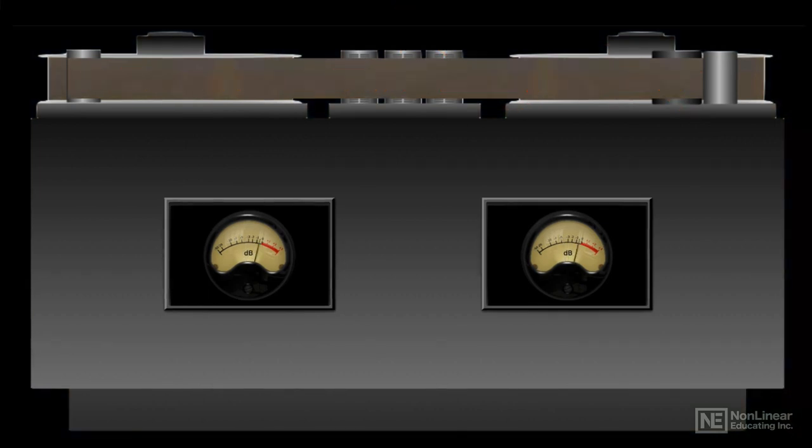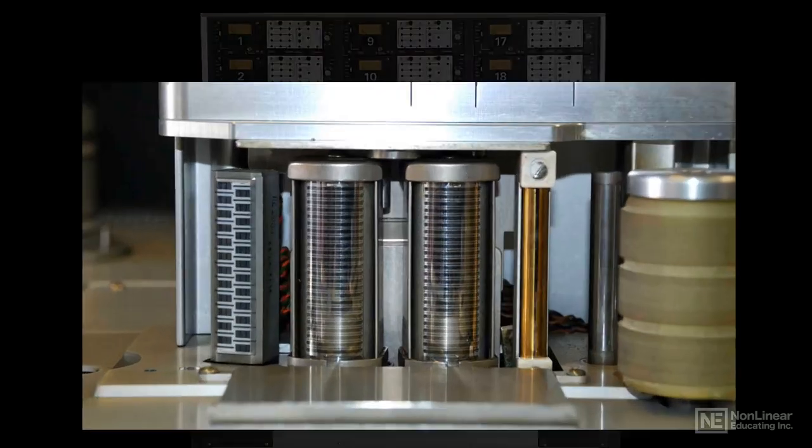To play back the recorded signal, the reverse is done. The magnetic signal on the tape is converted back into an electrical waveform, a voltage, which is then sent to the audio console for mixing and processing. Multitrack tape recorders do this independently for every track.